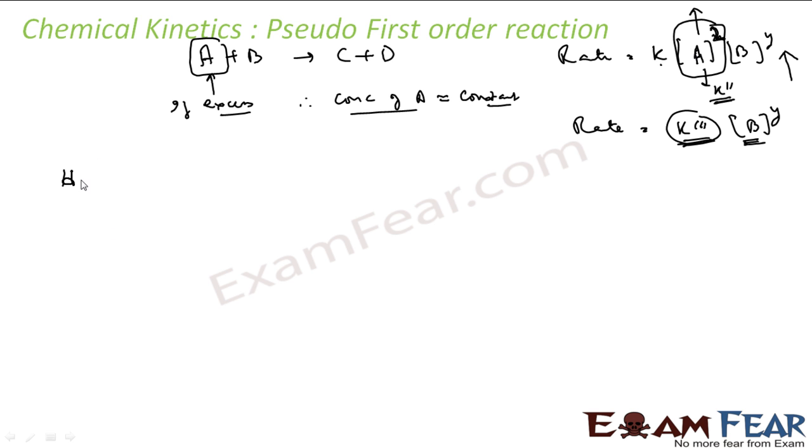So if you do a hydrolysis of, let's suppose, 0.01 mol of ethyl acetate with 10 mol of water. Let's see the reaction. So let's suppose I have ethyl acetate and I have water in acidic medium. I am doing a hydrolysis.